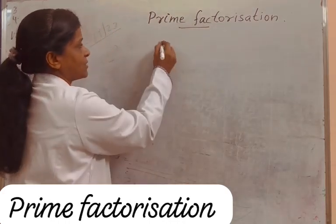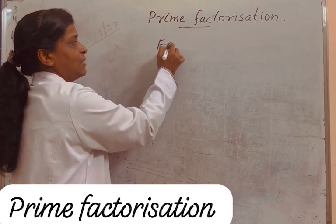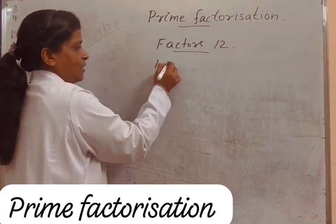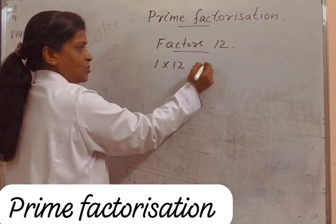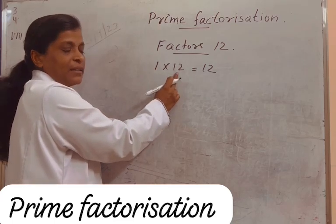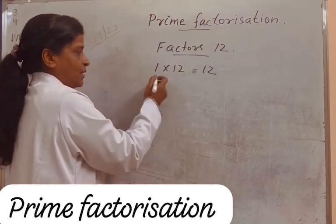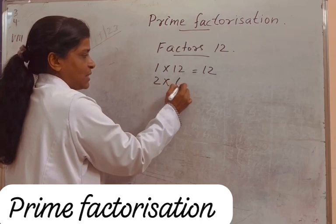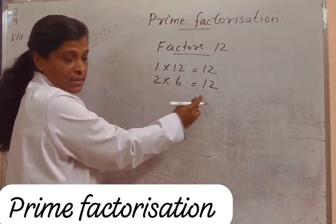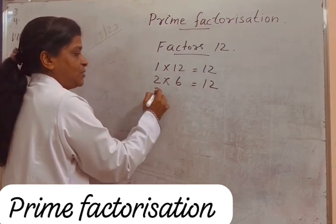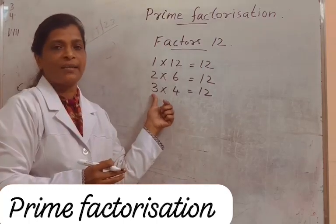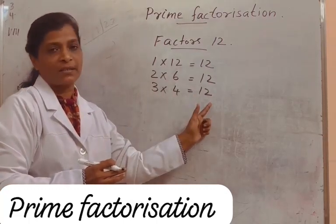What do you mean by factors of a number? For example, factors of 12. 1 into 12 is equal to 12, so 1 and 12 are the factors of 12. Then 2 sixes are 12, so 2 and 6 are also factors of 12. Then 3 into 4 is equal to 12, so 3 and 4 are also factors of 12.